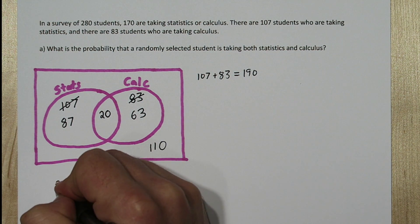So to determine the probability a randomly selected student is taking both stats and calculus, we'll look at the 20 students who are taking stats and calculus and divide it by the total number of students. And that probability is approximately .0714.